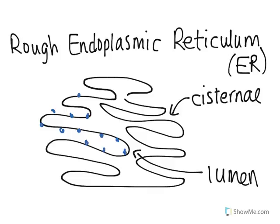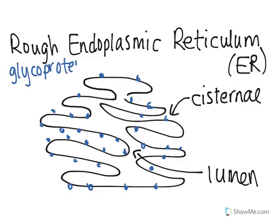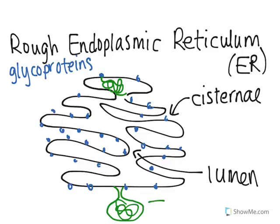Ribosomes are the organelles that produce proteins — they take mRNA from the nucleus and use that code to create proteins. Any time a ribosome is bound to a rough ER, it's going to be making proteins that will be exported from the cell. The main type of proteins they make are called glycoproteins, which means there's a sugar or carbohydrate connected to the protein. These ribosomes create the protein and it gets made inside the lumen. As the polypeptide continues to be made, it gets put into the lumen, and then the endoplasmic reticulum exports these proteins in little sacs called vesicles.